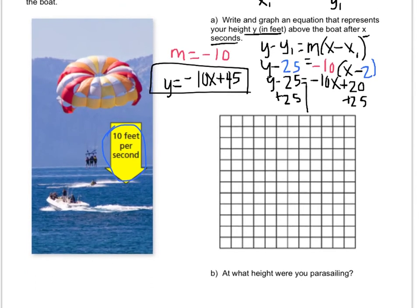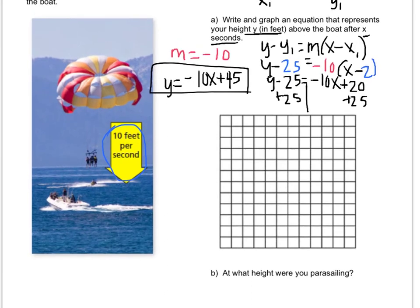We also have to graph it. And if x represents seconds and y represents feet, it doesn't make sense for me to go into either of the negative quadrants. So I'm going to stay in this first quadrant and graph. Let's see. I could probably go by 5s. So 5, 10, 15, etc. And this could go by 1s.